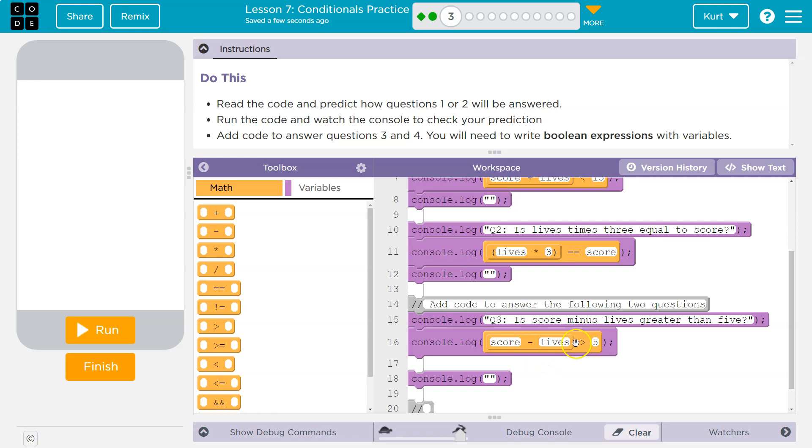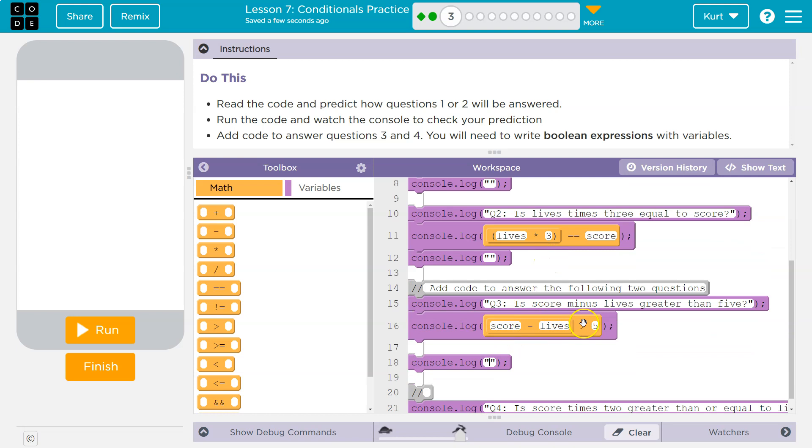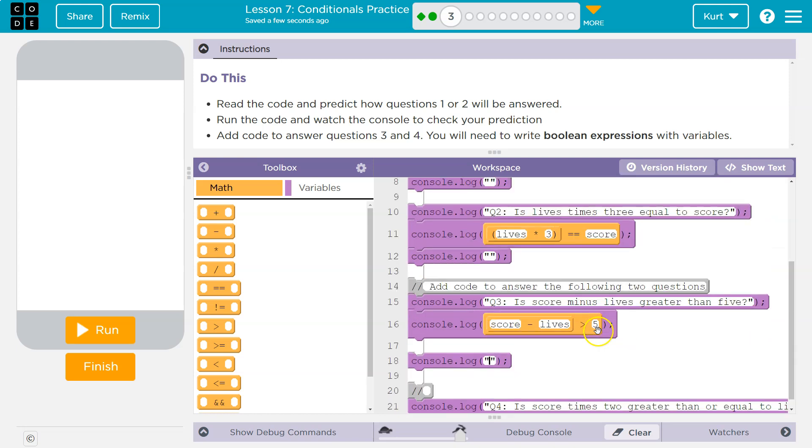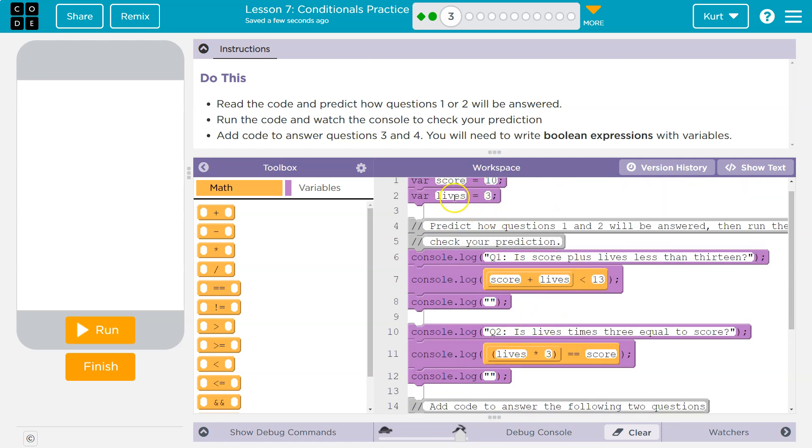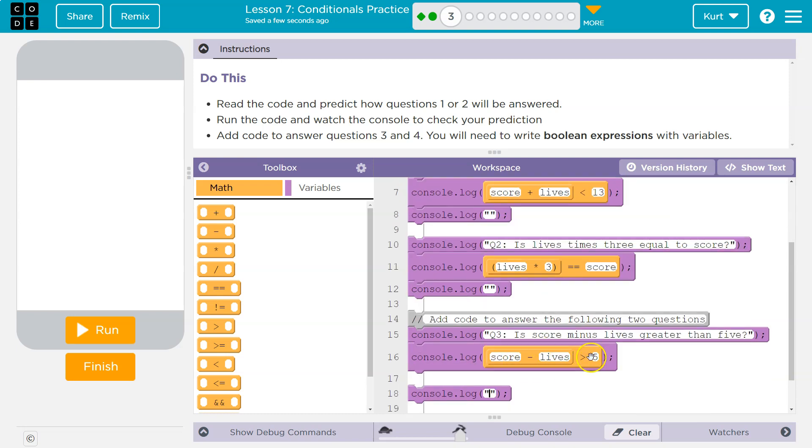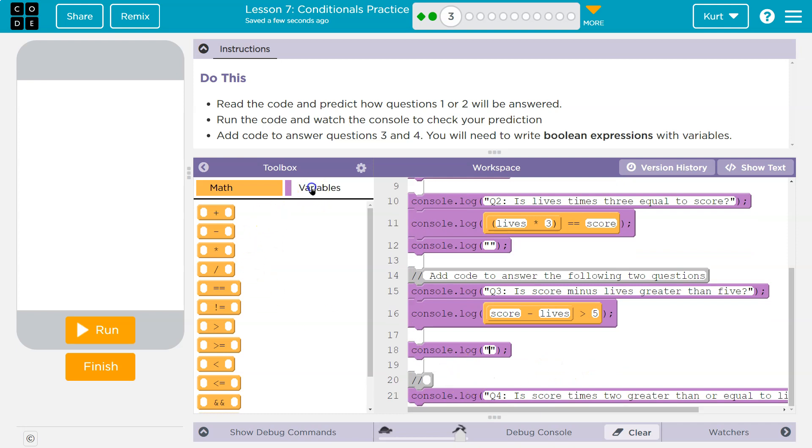So, is score minus lives greater than 5? Let's try to predict this. Score minus lives - so 10 minus 3. Keep in mind, these aren't ever changing the value. Lives times 3 does not change the value of lives. Just for this second, it does that math operation. Lives is still equal to 3. So, 10 minus 3 - is that greater than 5? Yes, I believe. Yes, it is.